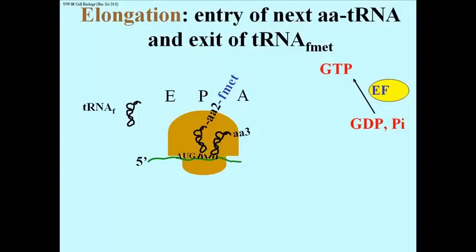It doesn't show it in this slide, but the next step, of course, will be to transfer the dipeptide, that is AA2-FMet, to AA3. Now that's not shown, but if you want to draw this for yourself to see what's going on, you can.